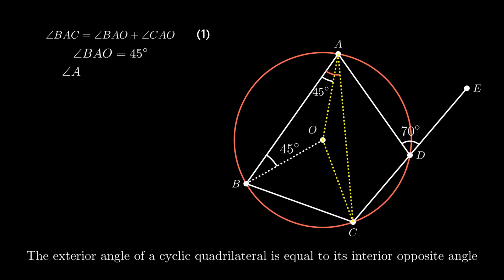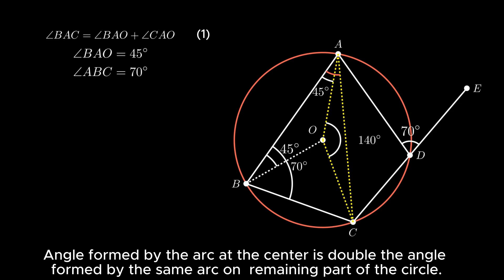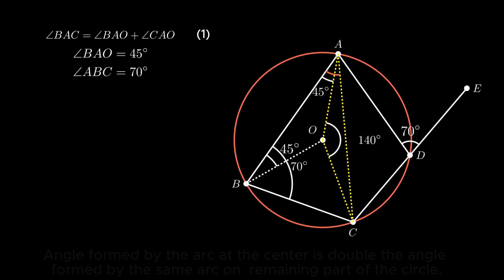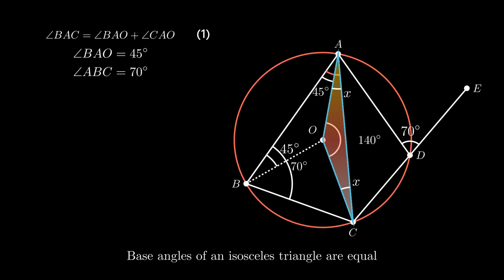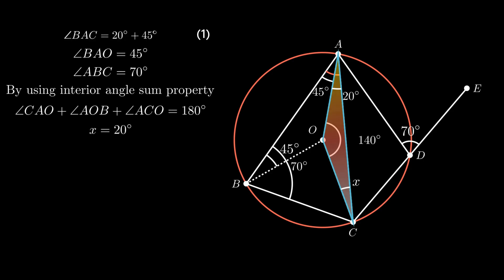Also, angle ABC equals angle ADE as the exterior angle of a cyclic quadrilateral equals the interior opposite angle. From the figure, angle AOC equals 140 degrees, as the angle subtended by an arc at the center is double the angle subtended by the same arc on the remaining part of the circle. In isosceles triangle AOC, base angles OAC and OCA are equal and assumed to be x. By the interior angle sum property, 2x equals 180 minus 140, giving x as 20 degrees. Putting the values of angle BAO as 45 degrees and angle CAO as 20 degrees, we get angle BAC as 65 degrees.